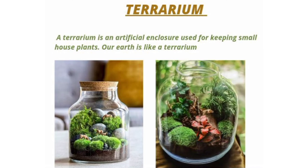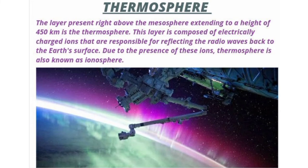Thermosphere. The layer present right above the mesosphere, extending to a height of 450 kilometers, is the thermosphere. This layer is composed of electrically charged ions that are responsible for reflecting the radio waves back to earth's surface. Due to the presence of these ions, the thermosphere is also known as ionosphere.